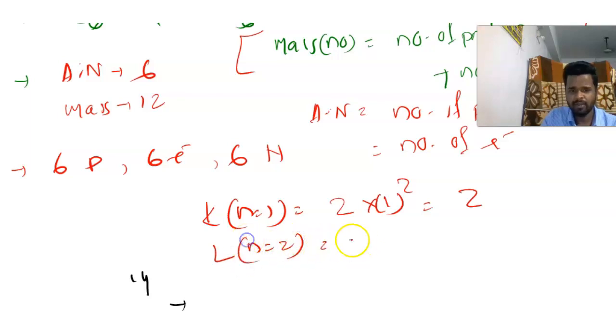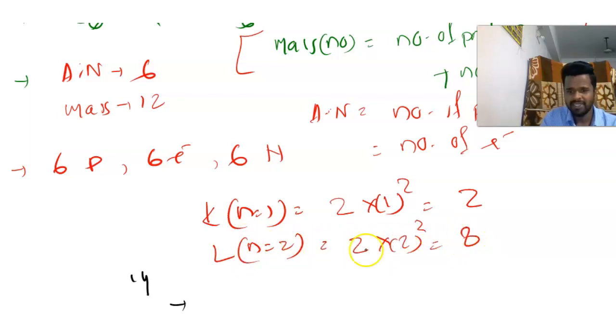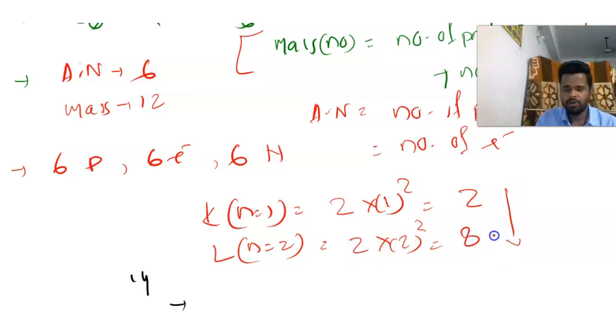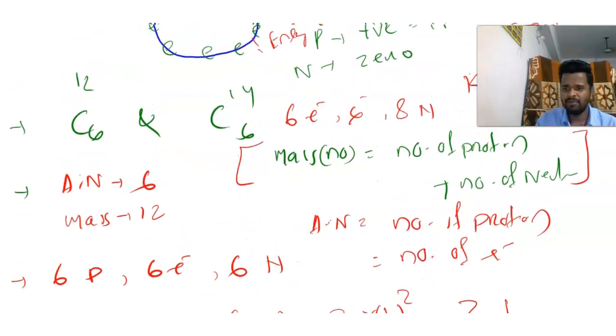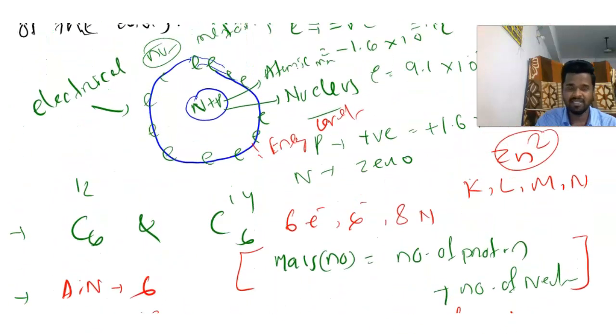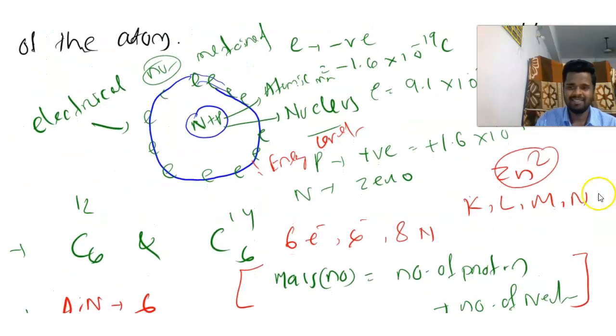For the L shell, n equals 2, so the total number of electrons is 2 × 2² equals 8. That is the rule to calculate the total number of electrons in an energy level shell.